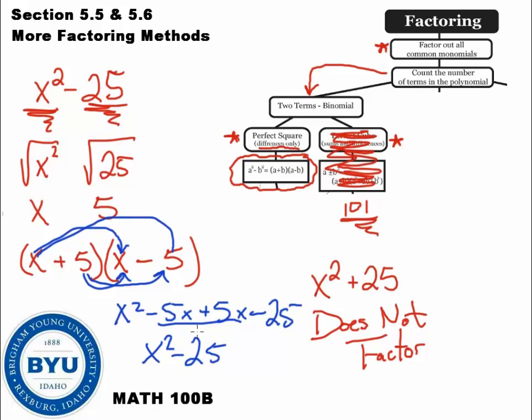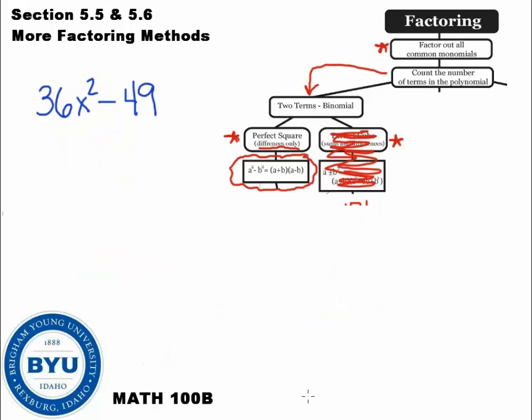So again, if you have two terms, you're going to ask yourself, are these perfect squares? If they are, take the square root of each one and write them twice. 1 with a plus and 1 with a minus. Let's take a look at another one. Okay, so here's another one. We're taking a look at this question.